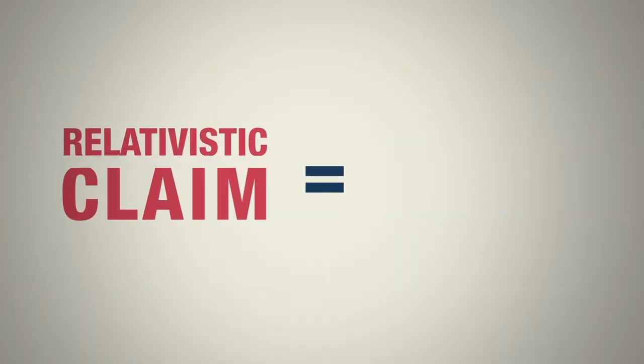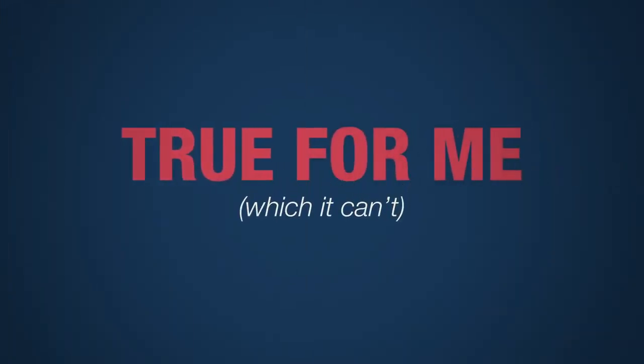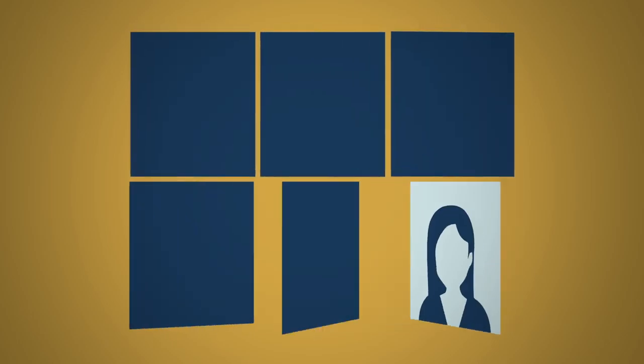He's assuming that his relativistic claim is universally true, right? Everything is relative, I guess, except his relativism. Now, if something can only be true for me, which it can't, then it doesn't apply to you or anyone else. So, what's the point in saying it?